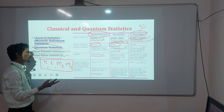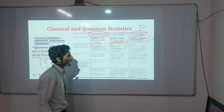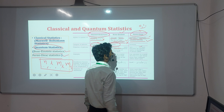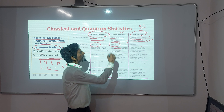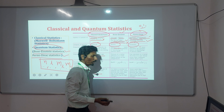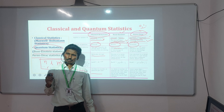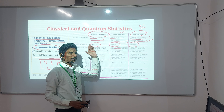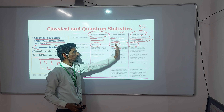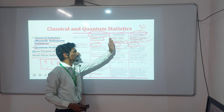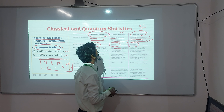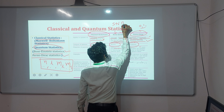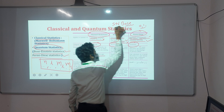In Fermi-Dirac statistics, particles obey the Pauli exclusion principle — no two particles can have the same four quantum numbers. The spin of these particles is half-integer: one-half, three-half, five-half, and so on. These particles are known as fermions. One of the scientists behind Bose-Einstein statistics is S.N. Bose — Satyendra Nath Bose — an Indian scientist who worked virtually with Einstein, and the distribution is named Bose-Einstein statistics.